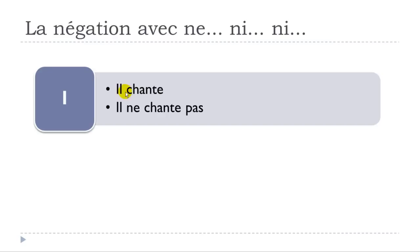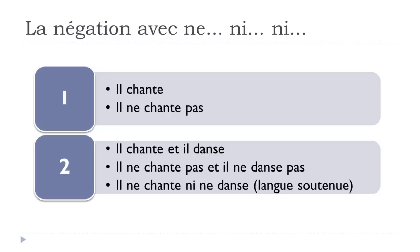With verbs: IL CHANTE — he's singing. Negative: IL NE CHANTE PAS. But if you have IL CHANTE ET IL DANSE, you can say IL NE CHANTE PAS ET IL NE DANSE PAS — you repeat the negative form with ET, and that's what people normally use. The NE NI NI option exists but is very rare because it's langue soutenue — very formal and official, not everyday language.